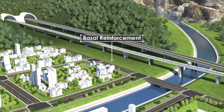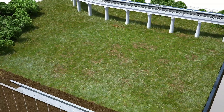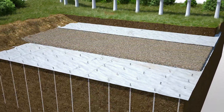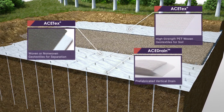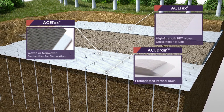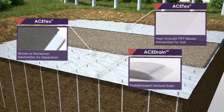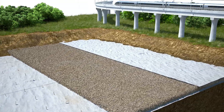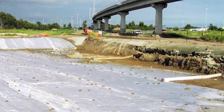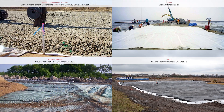Basal Reinforcement: Laying ACE-TEX geotextile on soft ground can effectively increase its bearing capacity. In conjunction with prefabricated vertical drains, it can greatly increase the efficiency of soil consolidation to achieve stable subsidence and increase soil shear strength. This is more effective, economical, and efficient when compared to other soil treatments or soil replacement.